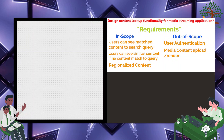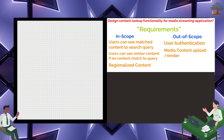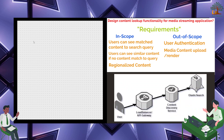I will now draw a high-level component diagram to see how the system will work end to end. We start with the user, who sends a query by typing in the search box. This lands on one of Netflix's load balancers, which acts as a gatekeeper for the outside internet. The load balancer checks the request metadata and forwards it to the respective microservice. The request finally lands on the Content Discovery Service, or CDS, which acts as an intermediate service coordinating between different backend services to fetch the movie or TV show list.